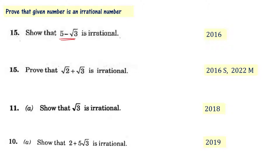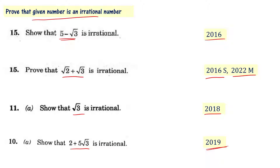In the 2016 exam, proving that 5 minus root 3 is irrational appeared. In the 2016 supplementary, root 2 plus root 3 irrational was asked. The 2022 model paper had root 3 is irrational, the 2018 exam had 2 plus 5 root 3 is irrational, and the 2019 final exam also included such a problem. So there is a fair chance for this kind of question to appear this year also. In this video, we will show that 5 minus root 3 is irrational.